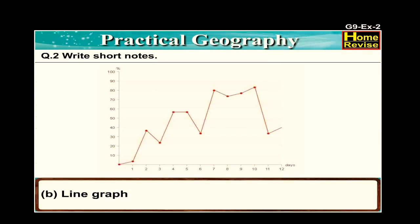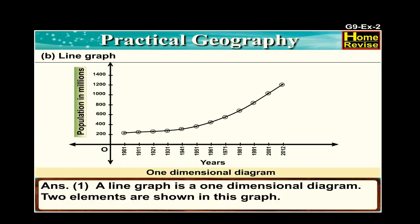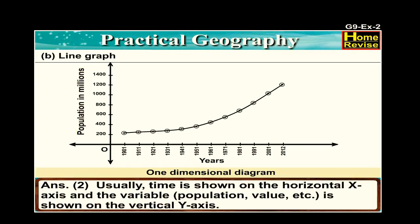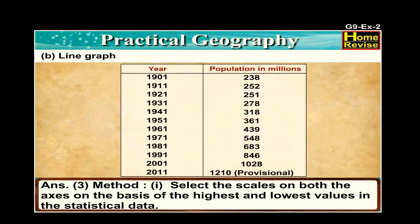Part b: line graph. A line graph is a one-dimensional diagram. Two elements are shown in this graph. Usually, time is shown on the horizontal, i.e., x-axis, and the variable — which could be population, value, etc. — is shown on the vertical y-axis.